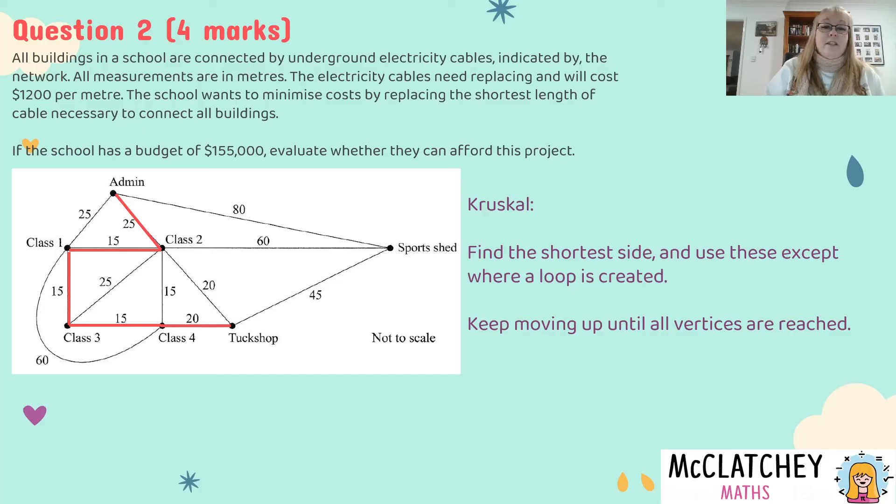So it's no longer a minimum spanning tree. Okay so now I'm going to move up to the next highest number in my network which is 25. So there we go from class 2 to admin. Once again I could have gone from class 1 to admin but I don't want to do both because then I'll create a triangle which closes in and creates that loop. I look at my next biggest number and it is 45 which is from the tuck shop to the sports shed.